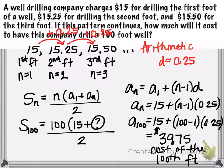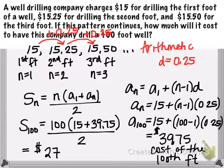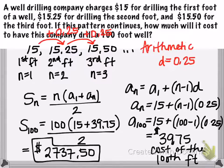But then this allows me to go back to my sum here, and now I can input the $39.75 as my last term and then complete the sum. So total, it looks like it will cost $2,737.50 to drill all 100 feet of this well. So here we go.